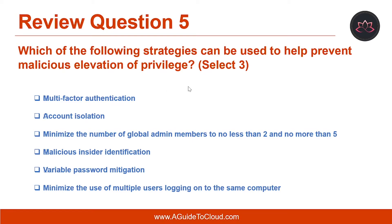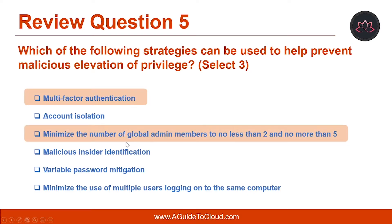Let's look at question number five: which of the following strategies can be used to help prevent malicious elevation of privilege? Select three. The answers are: multi-factor authentication; minimize the number of global admin members to no less than two and no more than five.